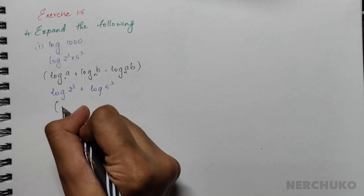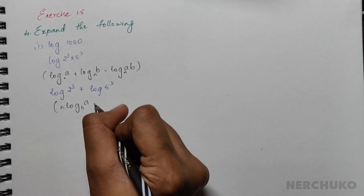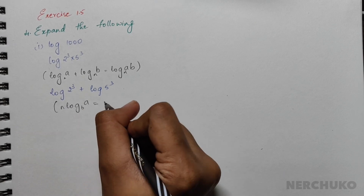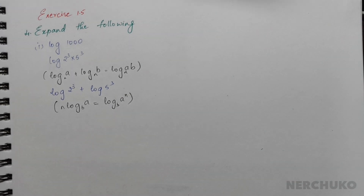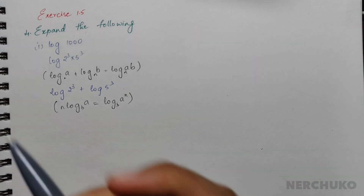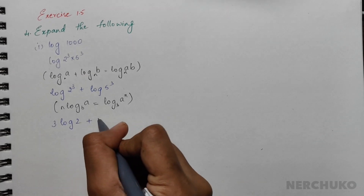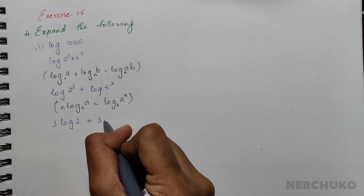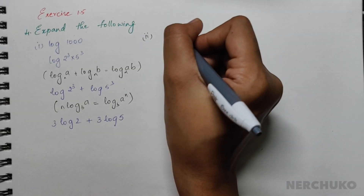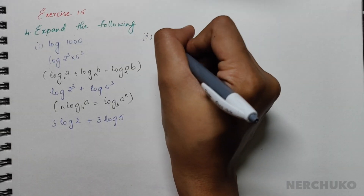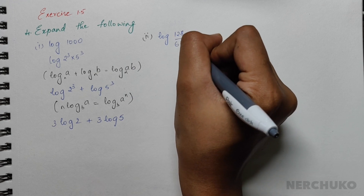Applying the formula n·log a = log(aⁿ), I would have 3·log 2 plus 3·log 5.